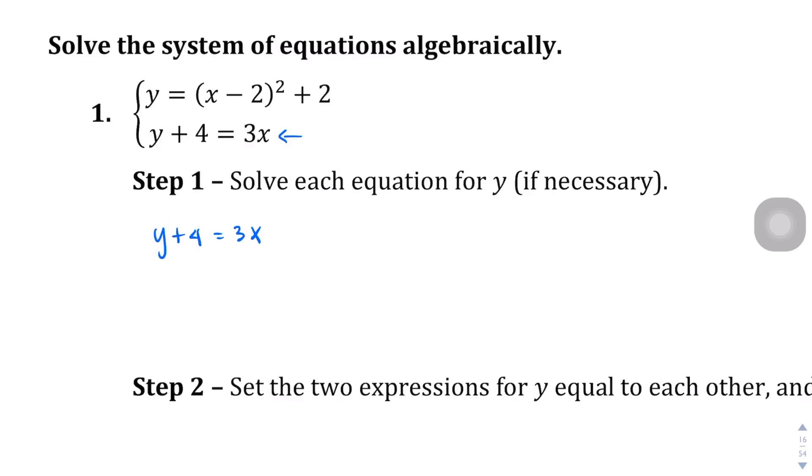This one's the easier one to work with. This first one is already set equal to y, so the second equation, if we just subtract 4 from both sides, we can change the way this equation looks to make it look like y equals 3x minus 4. So now, we have this equation here. We have this equation right here. And then we have the first equation, y equals x minus 2 squared plus 2. And then let me rewrite the second equation, y equals 3x minus 4.